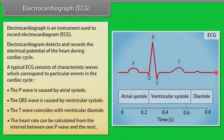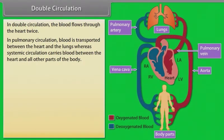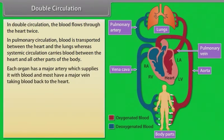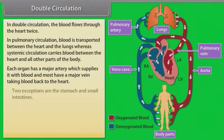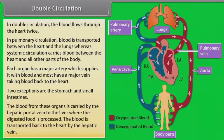In double circulation, the blood flows through the heart twice. In pulmonary circulation, blood is transported between the heart and the lungs, whereas systemic circulation carries blood between the heart and all other parts of the body. Each organ has a major artery which supplies it with blood and most have a major vein taking blood back to the heart. Two exceptions are the stomach and small intestines — blood from these organs is carried by the hepatic portal vein to the liver where digested food is processed, and then transported back to the heart by the hepatic vein.